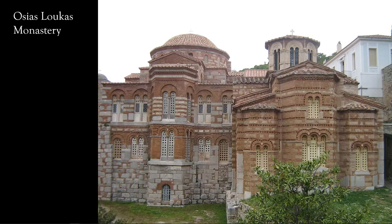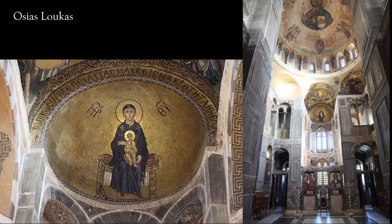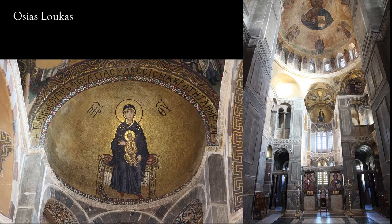Hosios Loukas Monastery has a famous Theotokos mosaic in the apse over the altar of Mary holding Christ, but it's also got a wonderful soaring dome with Christ, his right hand rising in blessing and his left hand holding the book of life. Here you can see the Theotokos seated on a wonderful cushioned throne, and here we can see Christ in the crossing with the great dome over the centre.